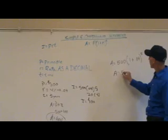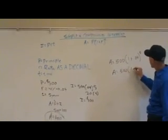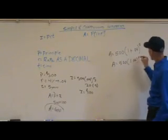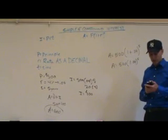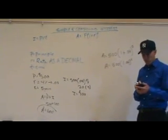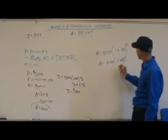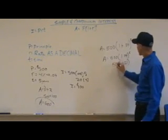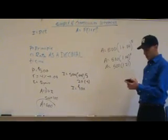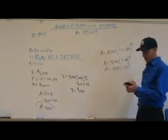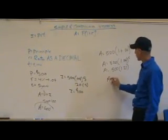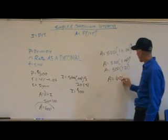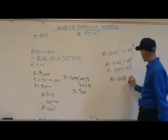So our amount equals 500 times 1.04 to the power of 5. On our calculator, 1.04 to the power of 5 ends up being 1.21. And so we multiply 1.21 by 500, and we end up with our amount equals 608.32.